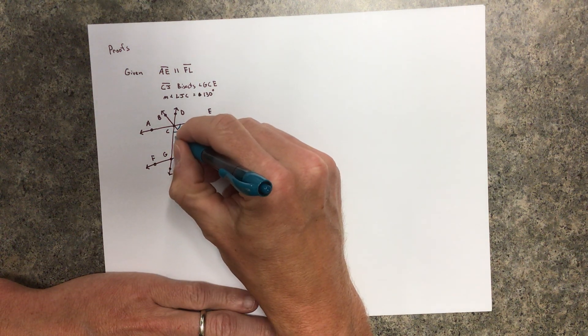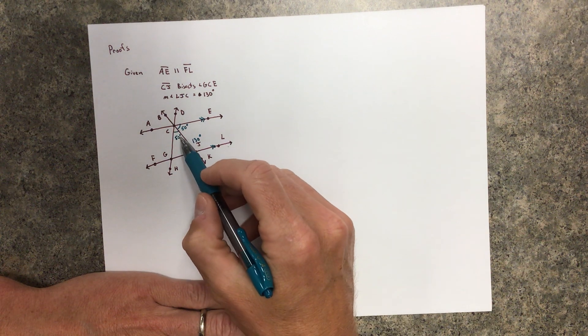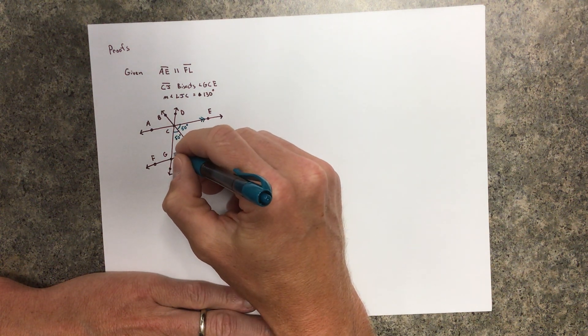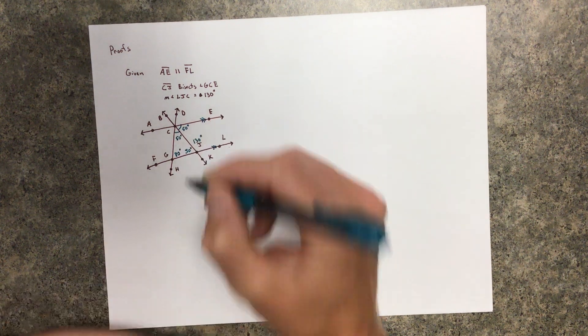Then I know this is 50 because of the definition of bisect. But if this is 50 and this is 50, I know that this is 80.